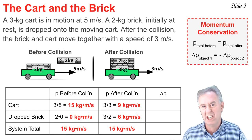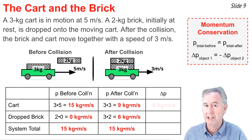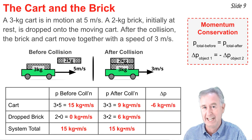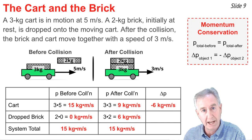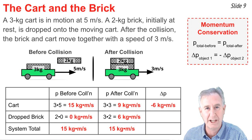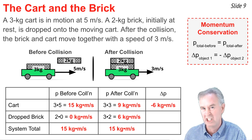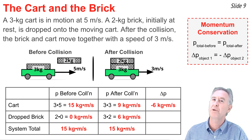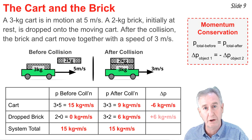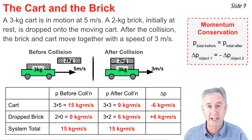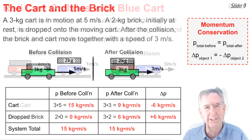If we look at the individual objects, the change in momentum of the cart was negative 6 — it went from 15 to 9. And the change in momentum of the brick is positive 6 — it went from 0 to 6. The change in momentum of one object is equal and opposite to the change of the other. But in the total change column, adding positive 6 and negative 6 gives a total change for the system of 0. Momentum is conserved by the system.